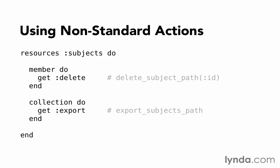That's all there is to adding additional actions to your resources. You just need to determine whether the action is going to act on a member of the resource or a collection, and then decide what HTTP verb applies — is this a get, post, patch, or delete request? Use that verb followed by the name of the action, and Rails will automatically create the related helper method to route to that action.